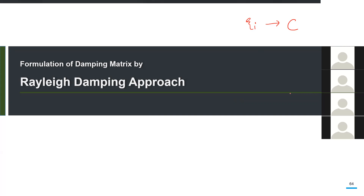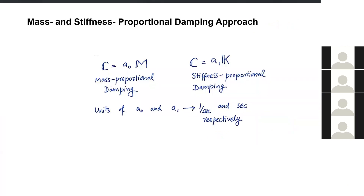The second option is Rayleigh damping. In this approach, the C matrix is written as a function of the mass matrix M and stiffness matrix K. Since the mode shapes are already orthogonal with respect to M and K, combining M and K in some proportions to construct C means that the mode shapes will also be orthogonal with respect to that C matrix — resulting in classical damping. We have two sub-ideas: mass proportional damping and stiffness proportional damping.